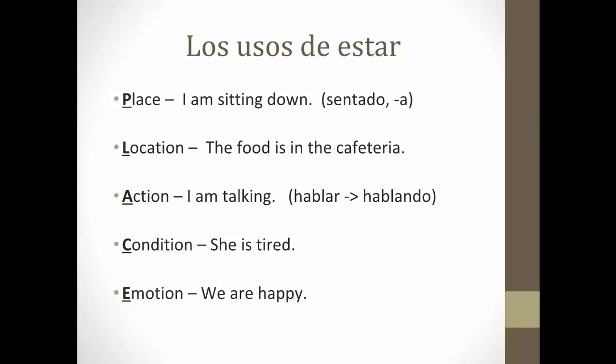Here are some examples. I am sitting down — estoy sentado or estoy sentada. The food is in the cafeteria — la comida está en la cafetería. I am talking — estoy hablando, which is the present progressive; we'll learn more about this next year. Condition: she is tired — ella está cansada. Emotion: we are happy — estamos contentos.